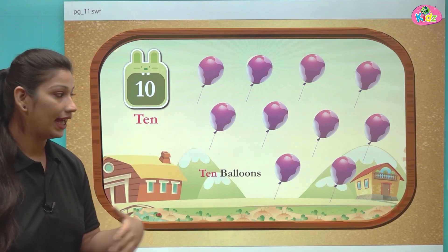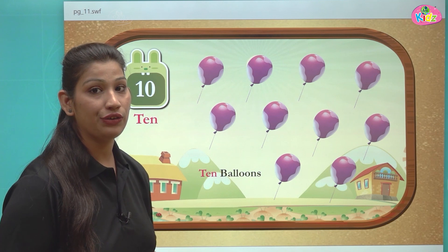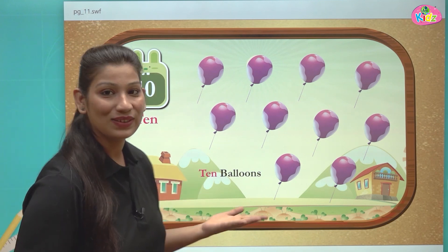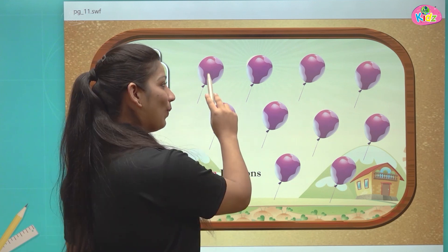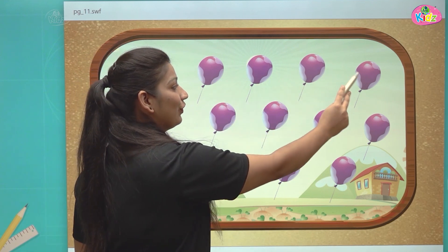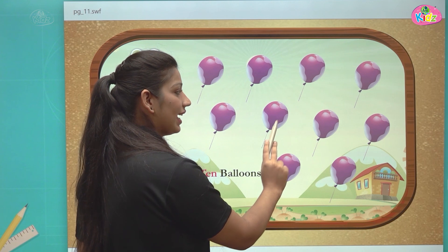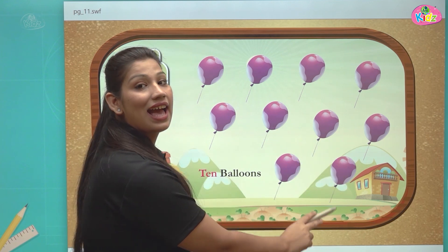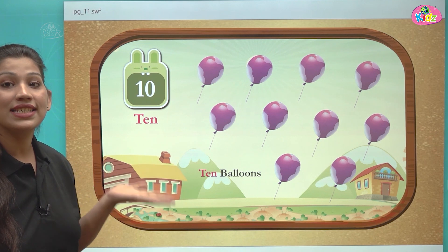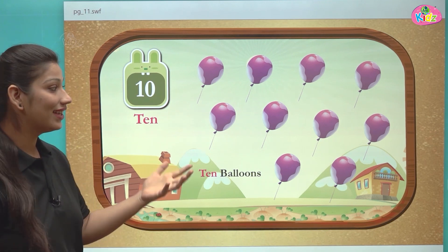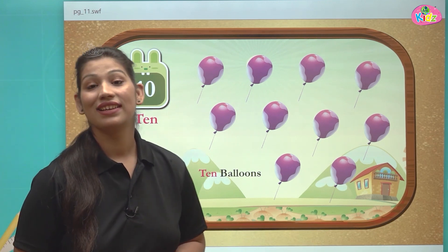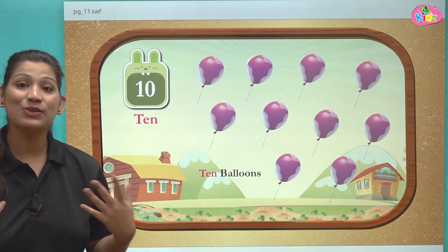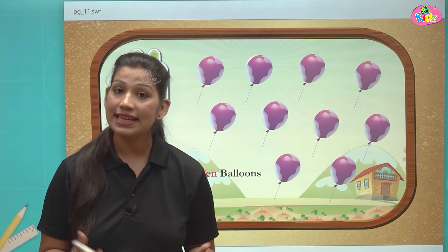Here we can see number 10 — one, zero, ten. And here we can see a scenery with balloons. Let us count the number of balloons: one, two, three, four, five, six, seven, eight, nine, and ten. There are ten balloons in total.